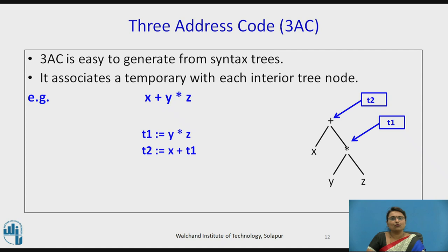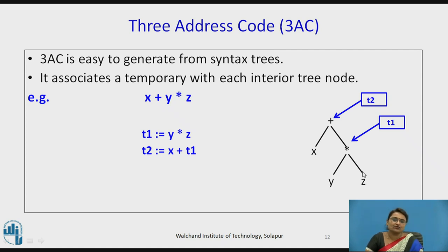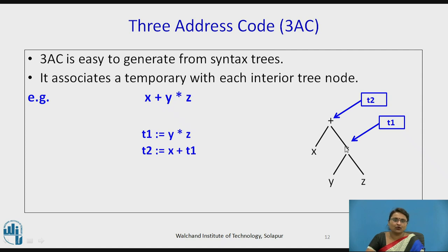When we take the syntax tree for X plus Y multiplied by Z, temporary variables are associated with the internal nodes. The syntax tree has multiplication of Y and Z and then addition with X. Temporary variables are created for every internal node of the tree — T1 is created for the multiplication node and T2 for the plus node. Each part of the tree node is converted into one three-address code statement.